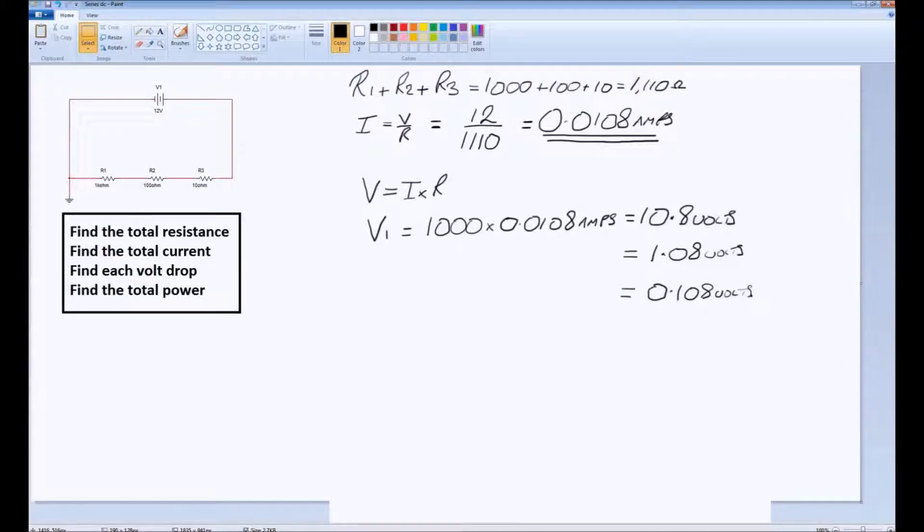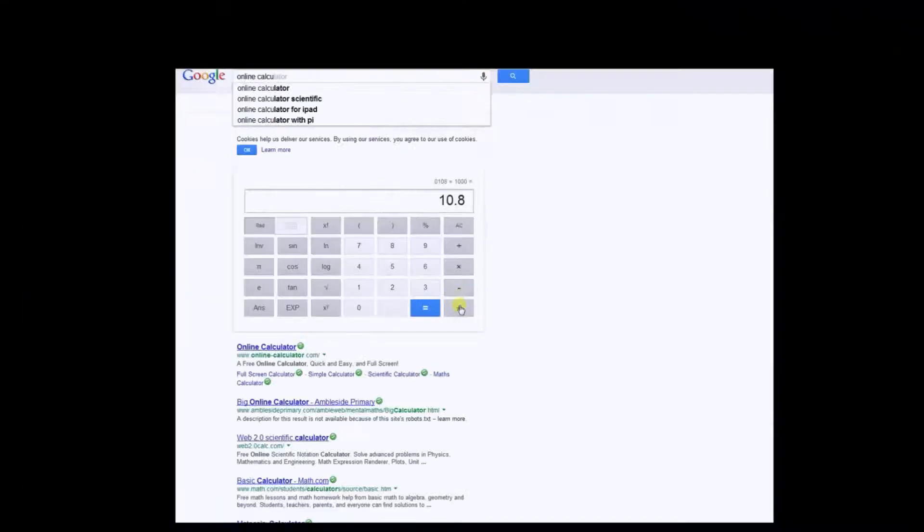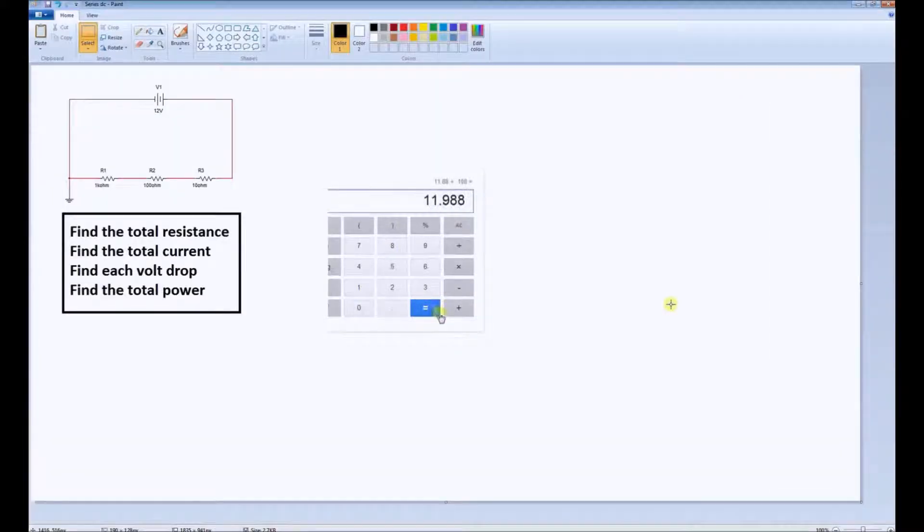When we add these three voltages together, we see our result is very close to 12 volts, and this is your check. Your volt drops, the sum of the external volt drops in the circuit, should come very close to the applied supply voltage. This is known as Kirchhoff's voltage law.